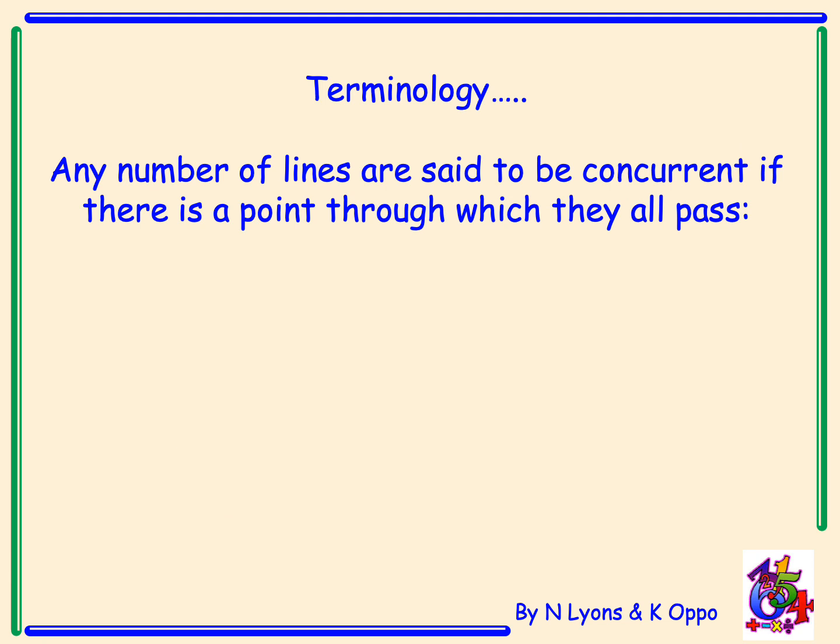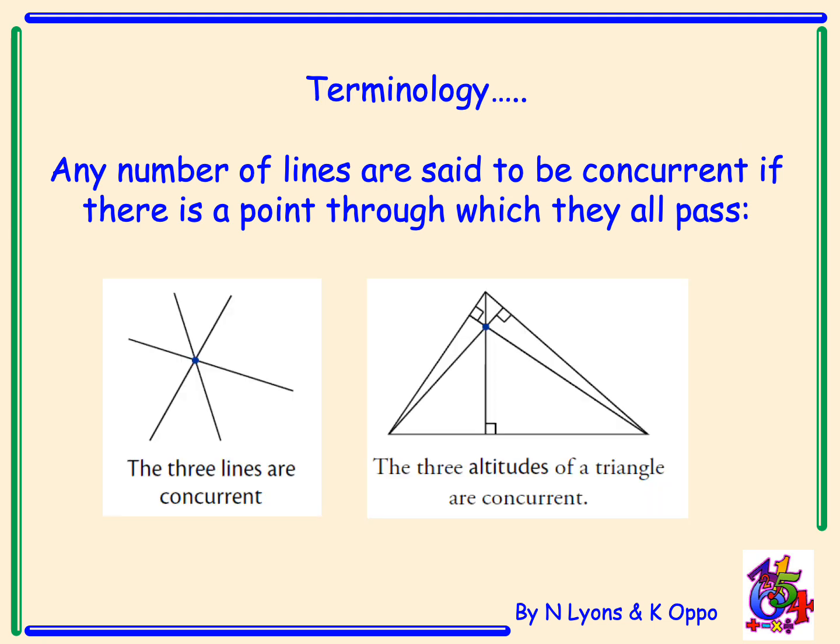Some terminology you should be aware of: Any number of lines are said to be concurrent if there is a point through which they all pass. As you can see, the three altitudes of a triangle are concurrent, and the point at which they meet is called the orthocentre. You may be asked in the exam to find the coordinates of the orthocentre, and therefore you would need to find where the altitudes meet within the triangle.